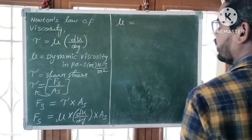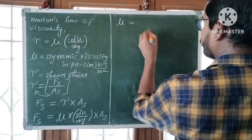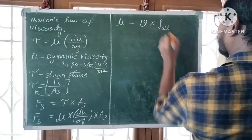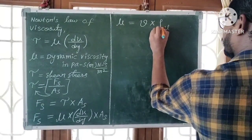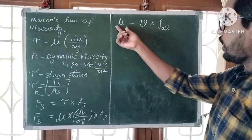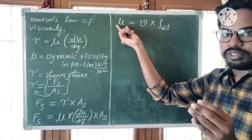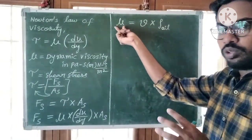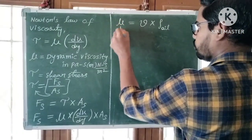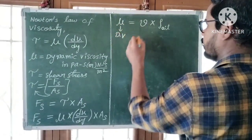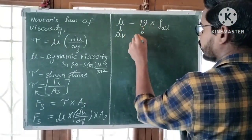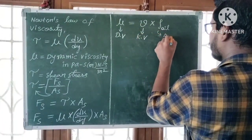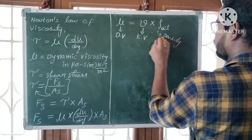Dynamic viscosity μ = kinematic viscosity ν × density of oil ρ. This is the relationship between dynamic viscosity and kinematic viscosity. Here ν is kinematic viscosity, μ is dynamic viscosity, and ρ is the density of oil.